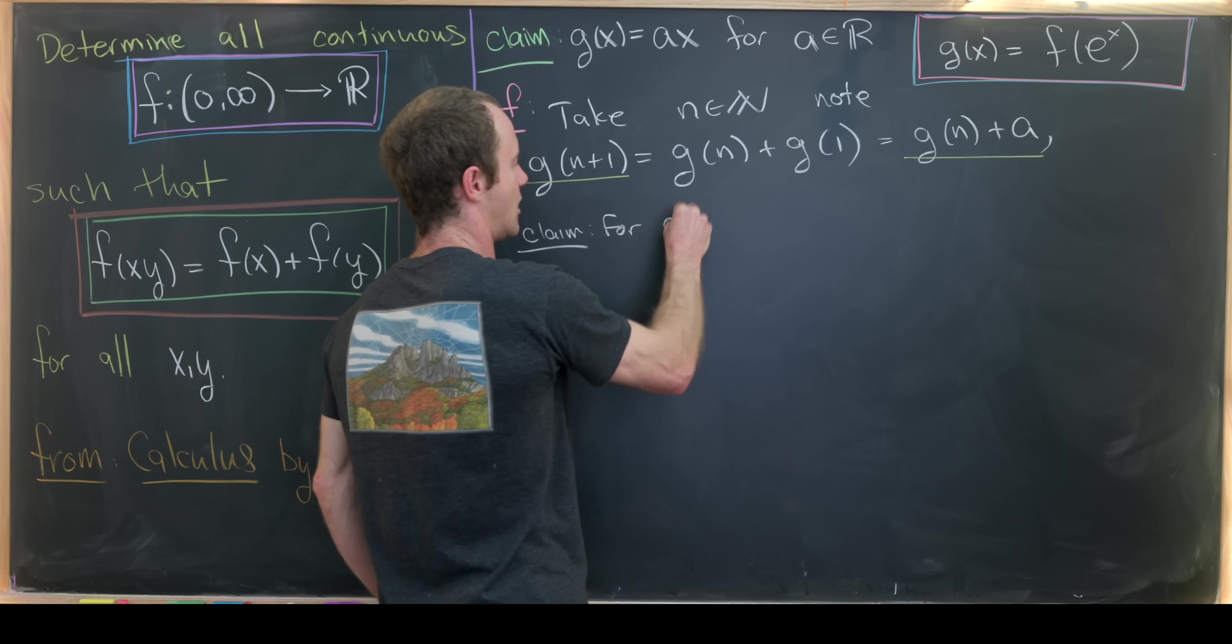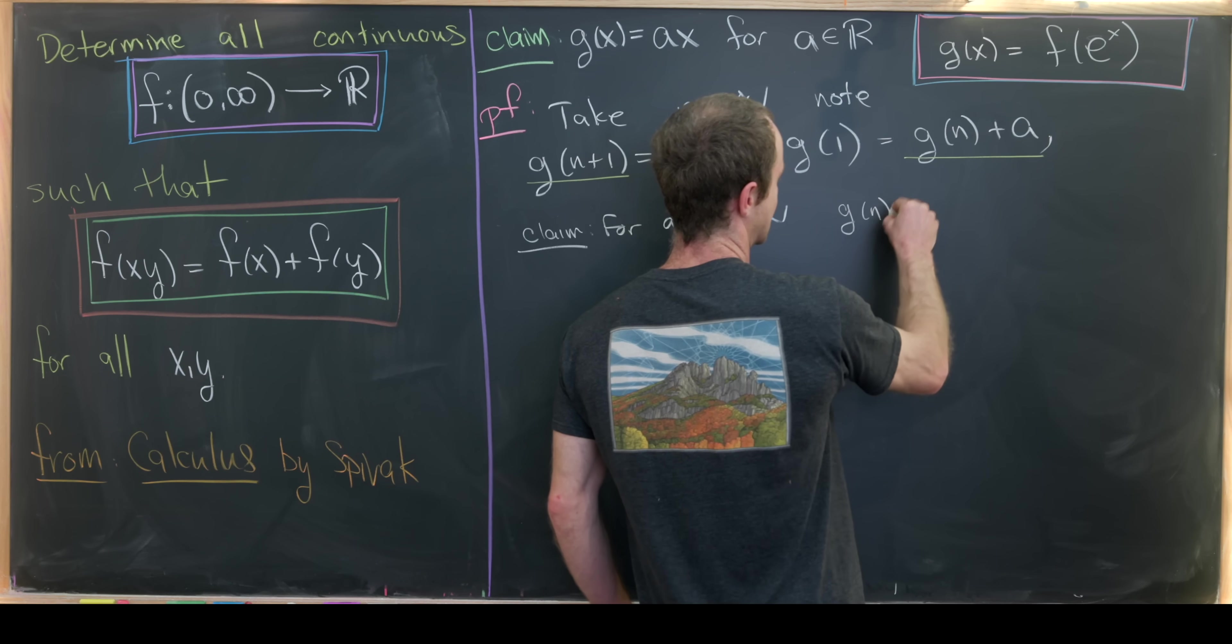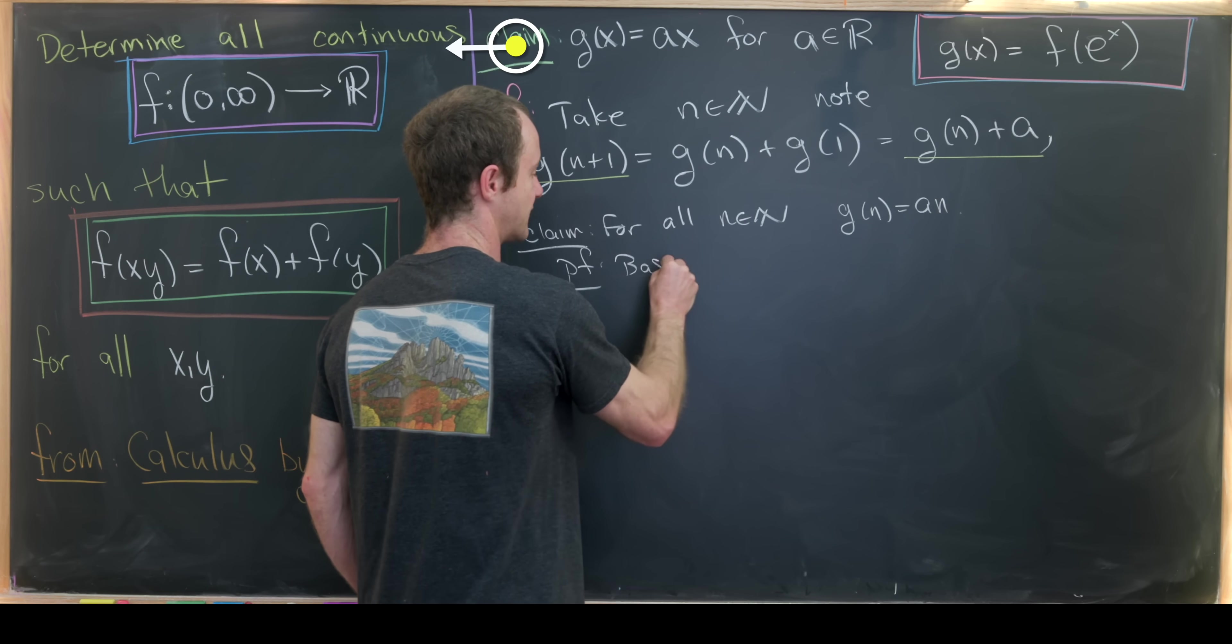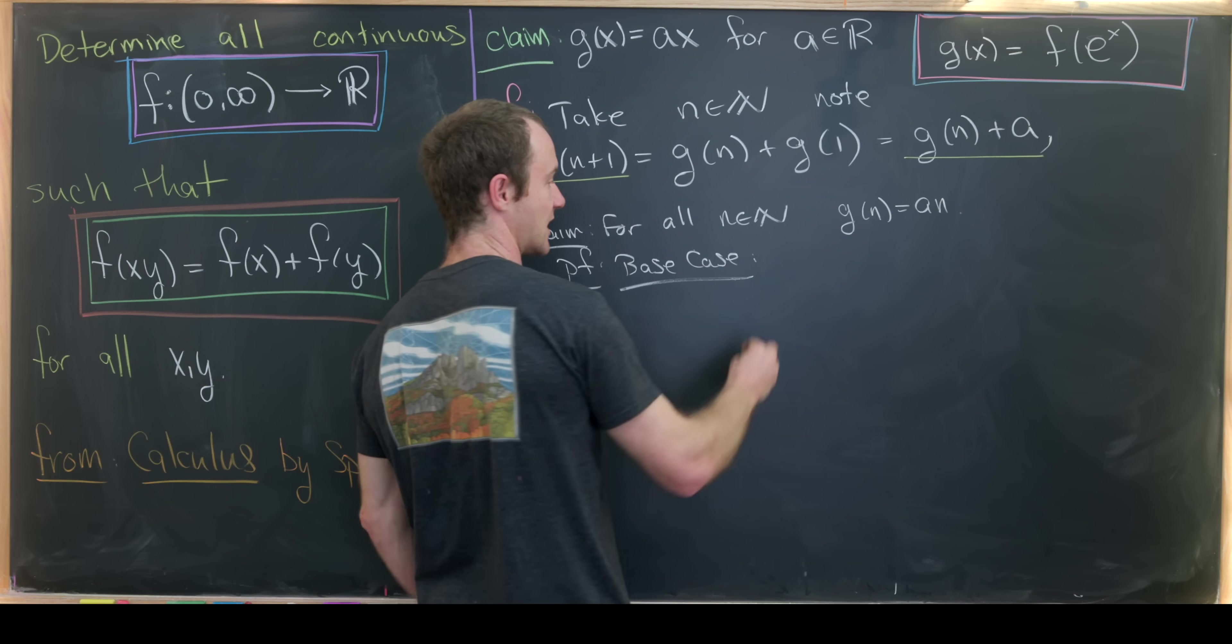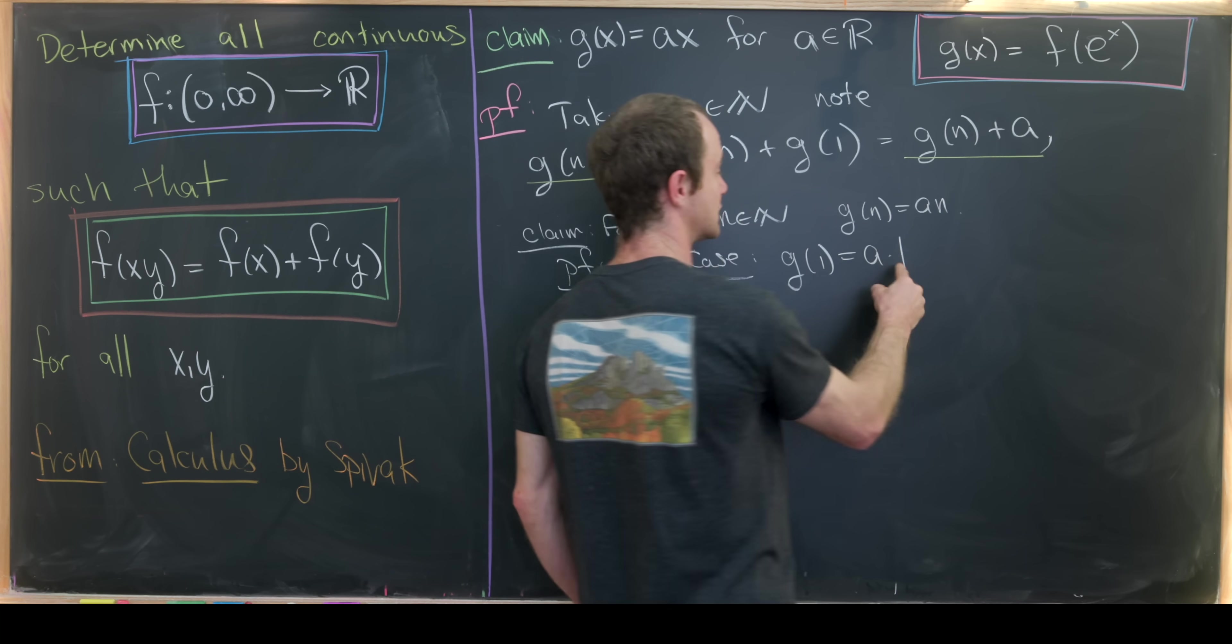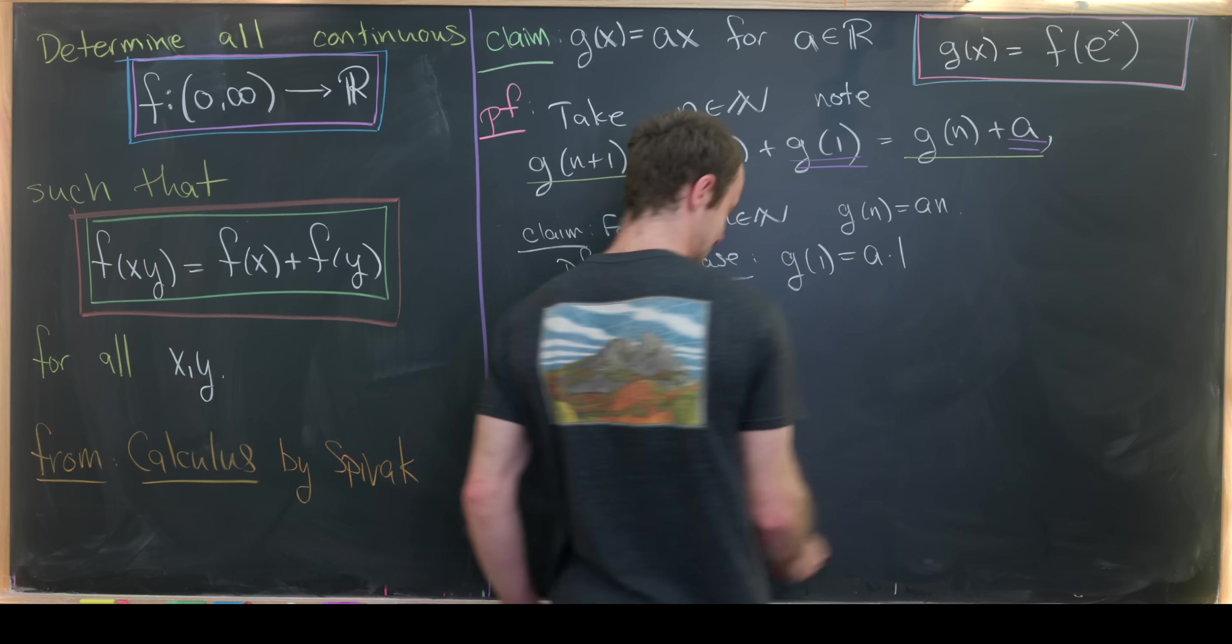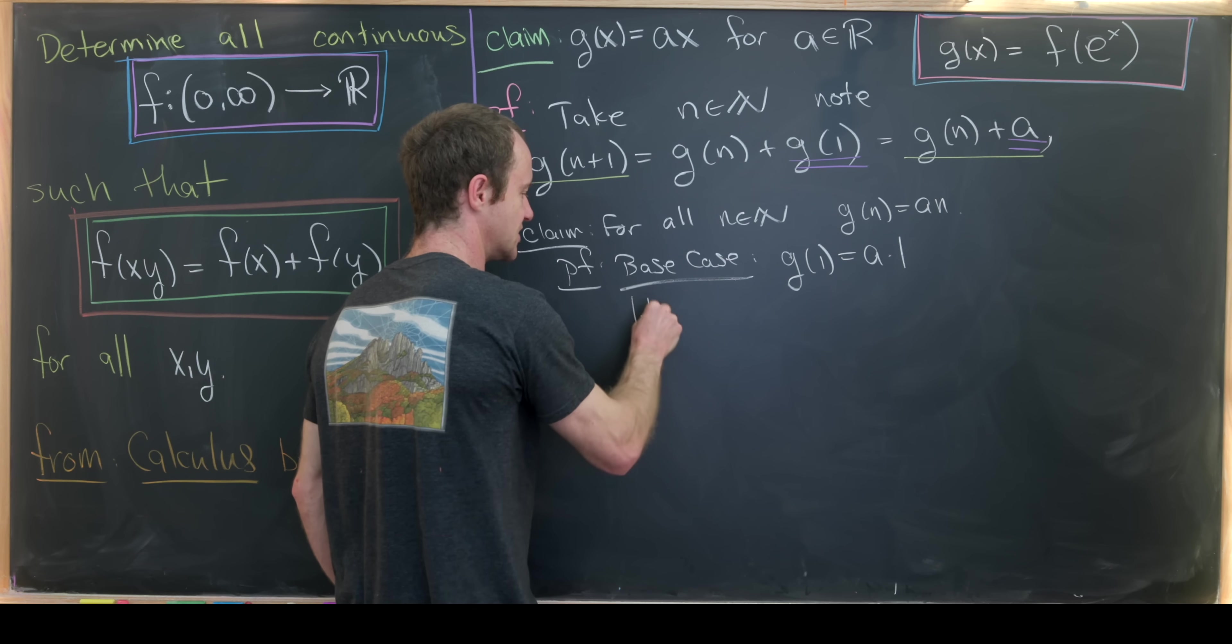So let's make that a subclaim within this proof. For all natural numbers n, we have g evaluated at n is equal to a times n. So our proof of this will be by induction, which means we first need some sort of base case. And let's observe that our n equals 1 base case is very simple because g(1) equals a times 1, given that a was defined to be g(1). Let's maybe underline both of these just to show that that's how a was defined. Okay, now we can make an induction hypothesis.